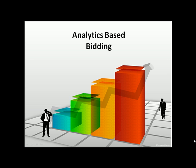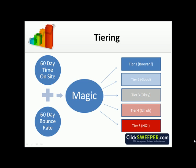Today we're going to talk about analytic space bidding and click sweeper. First, what is analytic space bidding anyway? It takes the last 60 days of time on site and bounce rate data, as well as analytics conversions, adds its own special click sweeper magic, and then tiers them into 5 tiers.